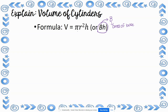When you look at the first formula, pi times radius squared is the area of the base, because the base of a cylinder is a circle. So we find the area of the circle first, and then multiply by the height of the cylinder.